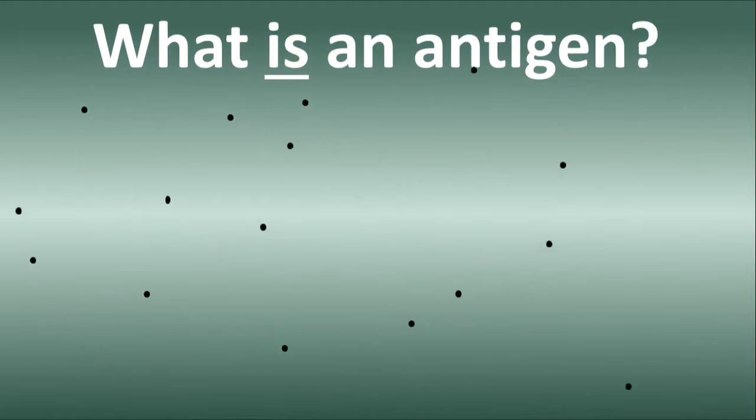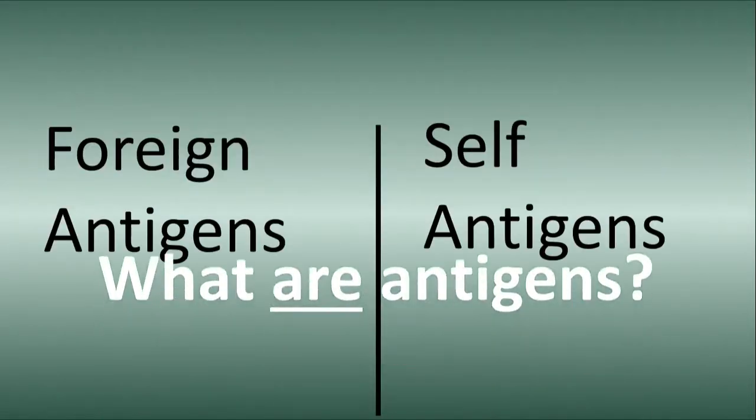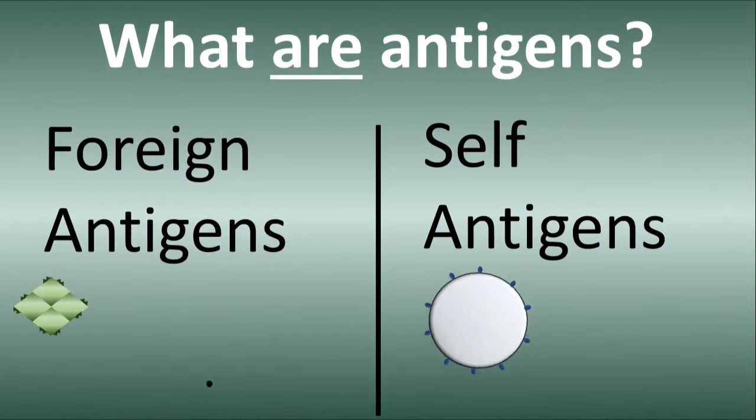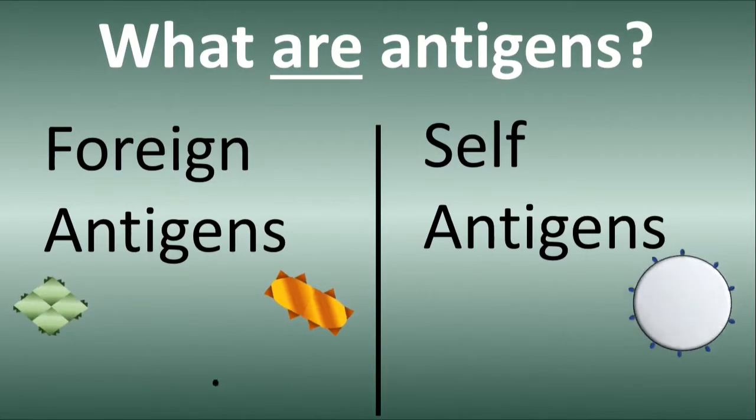What is an antigen? Antigens are certain molecules that are in your body. Generally speaking, there are two types of antigens that could be present in your body: foreign antigens and self antigens. Foreign antigens are from anything that is not a part of your body.